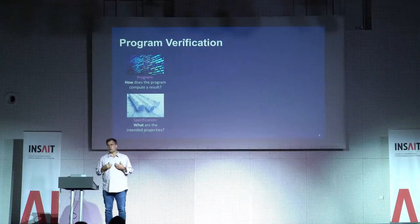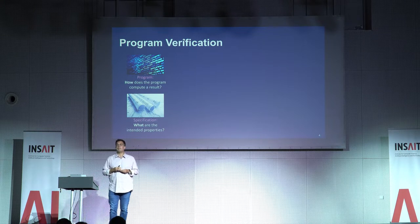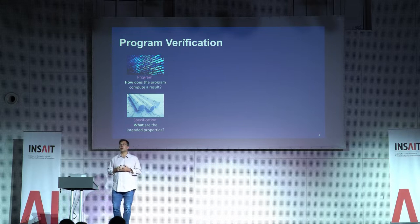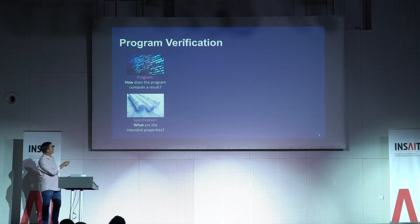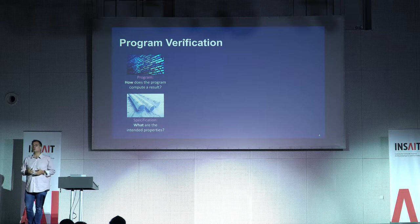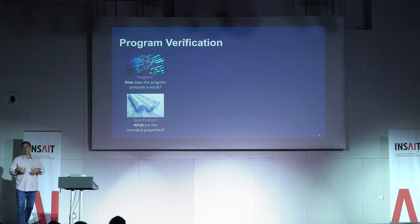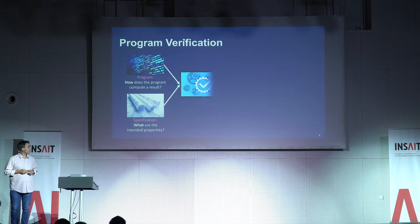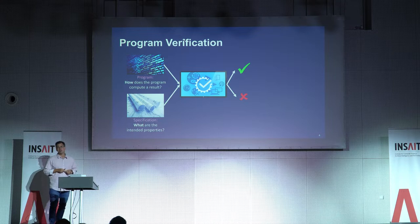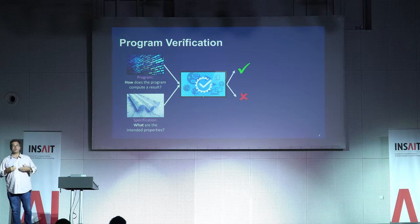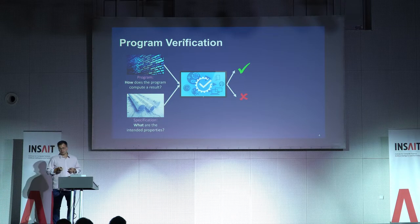Program verification is an attempt to complement — not replace — testing and reviews, by having an additional technique that lets you give very strong guarantees about the software you're building. The basic idea is that you have two inputs: the program itself, which describes how you want to compute something, and a specification that describes what properties you'd like to check. You feed those into a program verification tool, hopefully an automated one, which either says the software has the specified properties, or returns an error message with enough content to understand and fix the error.